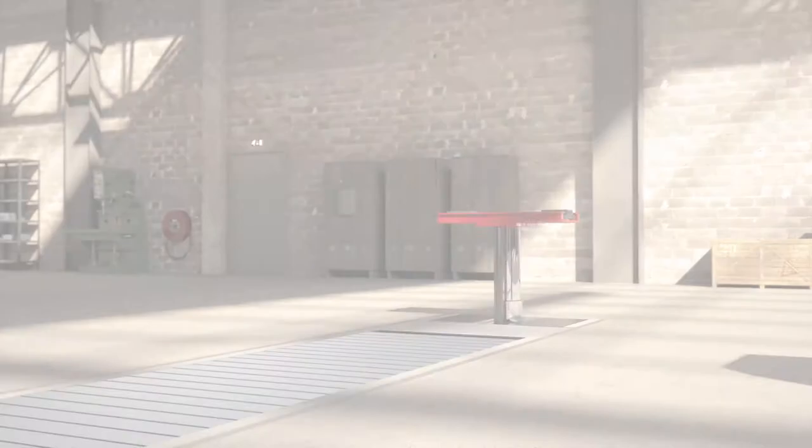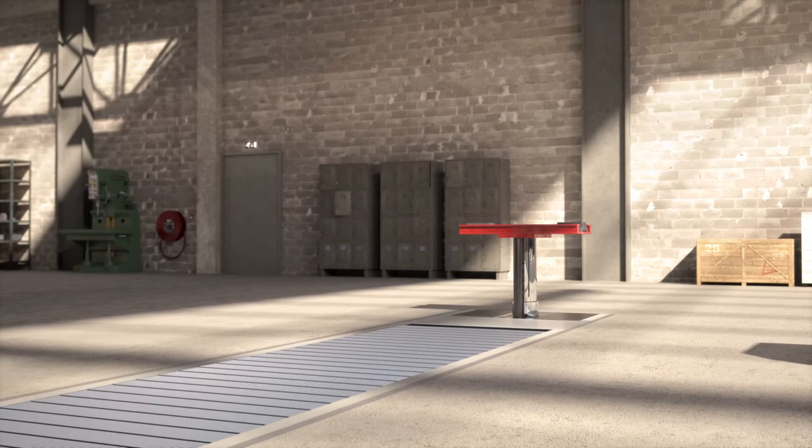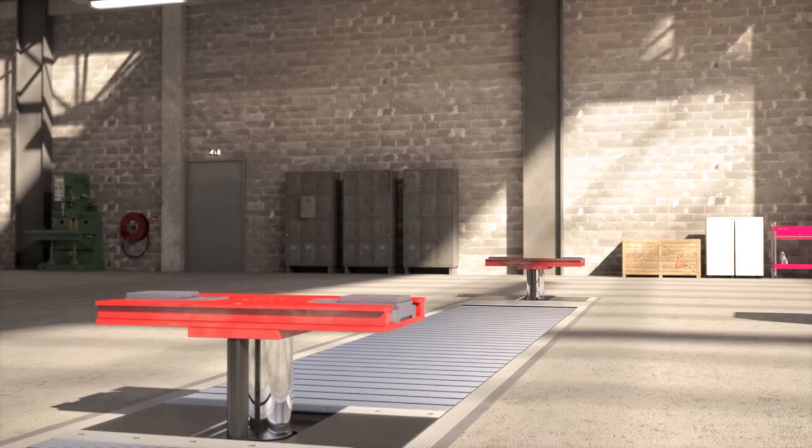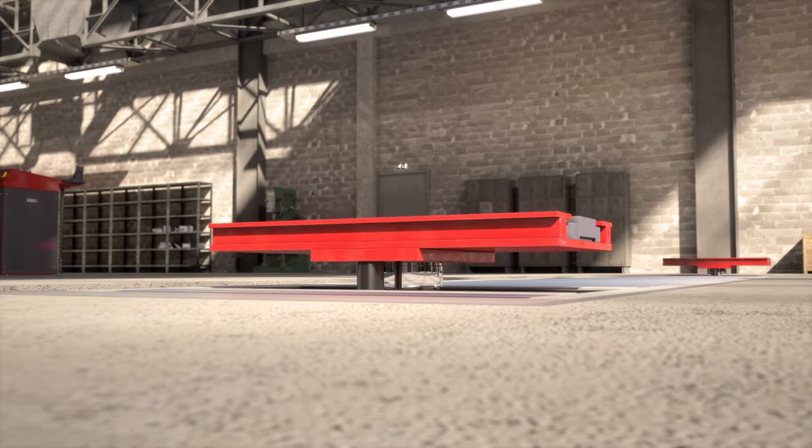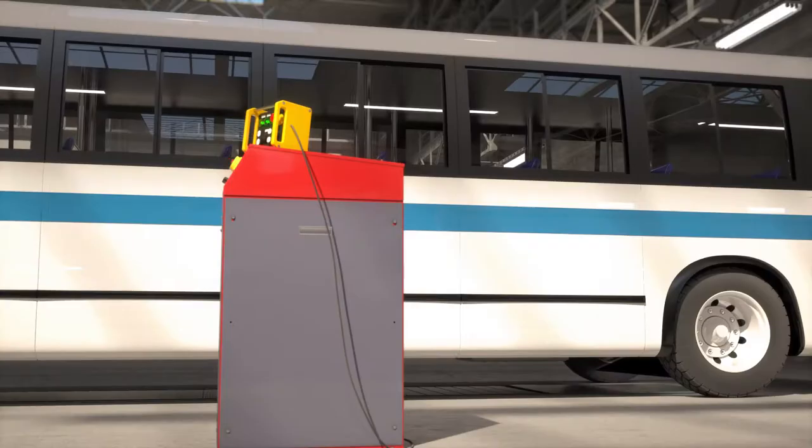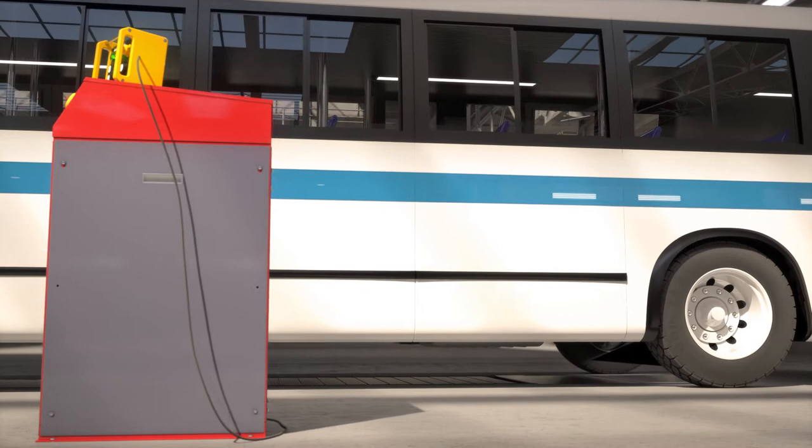Safety is one of the cornerstones of Stertil Koni vehicle lift development. That's why we have developed the continuous recess system. During the horizontal positioning of the vehicle, the bolsters remain completely flush with the floor, which minimizes tripping hazards and is particularly suitable for low-clearance vehicles.